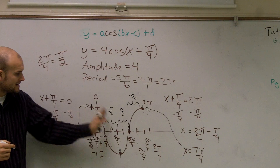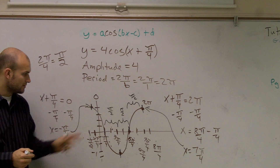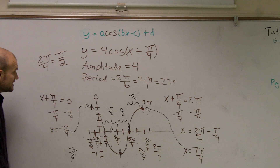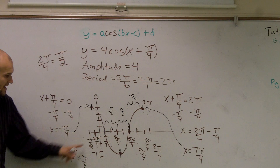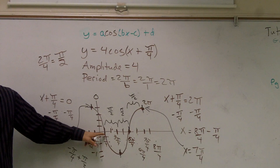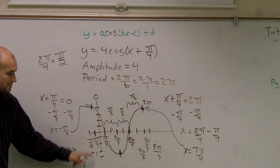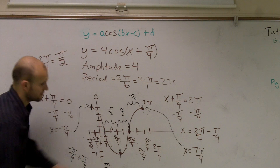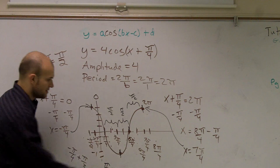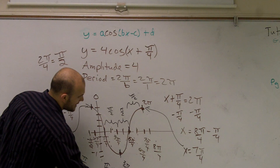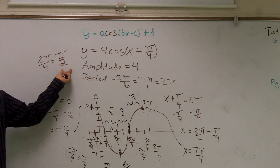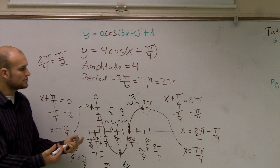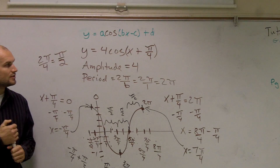Once I know my two endpoints, to find the next important points I just keep adding pi over two. From negative pi over four, add pi over two to get pi over four. From pi over four, add pi over two to get three pi over four. From three pi over four, add pi over two — and that's the distance between the important points. You need more practice, but if you follow the steps you can work through it.